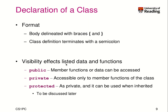Visibility affects data and functions. So far you know about public and private. Private means only member functions of the class can access those variables. Protected is a new level — it's similar to private, but can also be used by classes that inherit from our base class. We will discuss this later. For now, just know there are three levels: public, private, and protected.